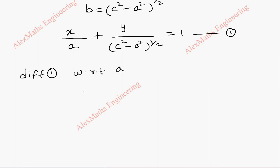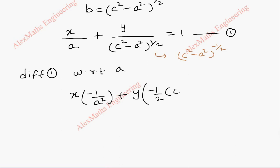When we differentiate with respect to the constant a, x and y are treated as constants and a is the variable. So x stays as it is: differentiation of 1/a gives -1/a². In the same way, y stays as it is, and the term (c² - a²)^(1/2) taken to the numerator becomes (c² - a²)^(-1/2). Differentiating by chain rule gives (-1/2)(c² - a²)^(-1/2 - 1) × (-2a), which equals 0.